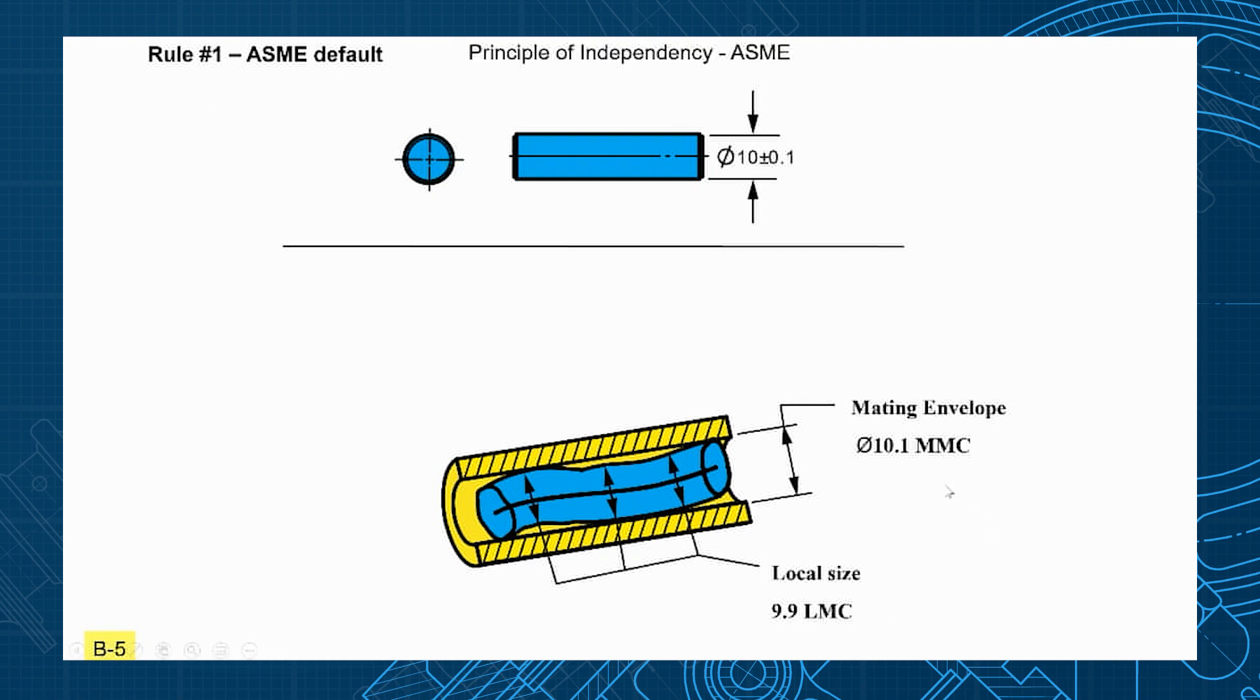Now what if we didn't want the mating envelope? I don't really care if it fits into a hole. We just care about the cross sections have to be between 10.1 to 9.9. Well in ASME we can use I in a circle which stands for independency. And this states that size and form requirements are now independent.